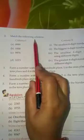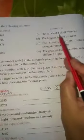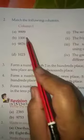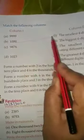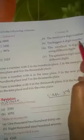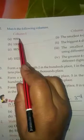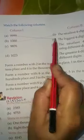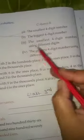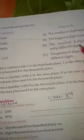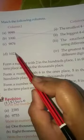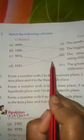Now match the following columns. The smallest 4-digit number is B: 1000. The biggest 4-digit number is A: 9999. The smallest 4-digit number using different digits is D: 1023. The greatest 4-digit number using different digits is C: 9876.